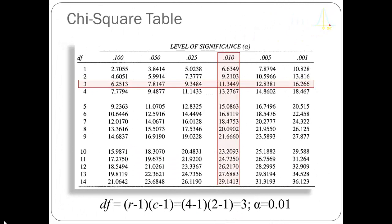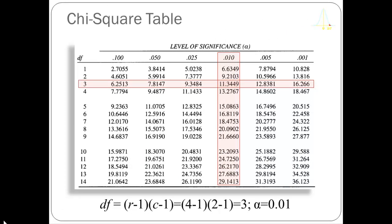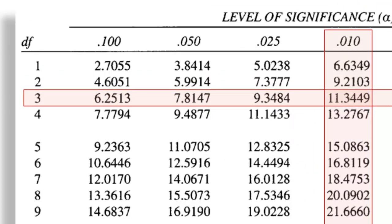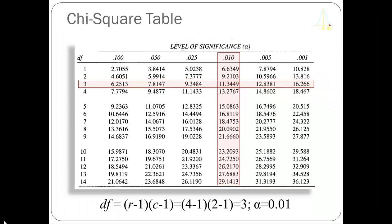Here's the chi-square distribution table from the back of the book. I set alpha at 0.01, I have three degrees of freedom, I look at the intersection of those two values, and I can see that my chi-square critical is 11.3449. That means when I calculate my chi-square, if I get a value less than this number I'm going to fail to reject the null and conclude there's no relationship between these two discrete non-orderable measures. If I get a chi-square calculated greater than 11.3449, I'm going to reject the null hypothesis and conclude there is a statistical relationship. If I've made an error, I made a type one error with probability equal to 0.01.